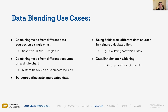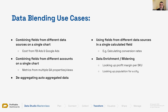Why do we call it widening? Because if you imagine your data like a Google Sheet with different columns, if we add more columns to that sheet, it becomes wider. So for the same data set, if we can look up different values and different data points and add them to the same data source, we're basically widening that data source.